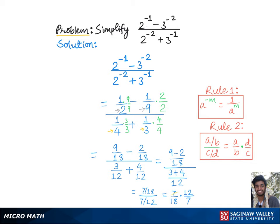Now these 7s cancel each other out, and 6 divides this 12 by 2 and 18 to give 3, which gives us 2 thirds, which is the final answer.